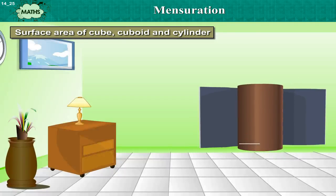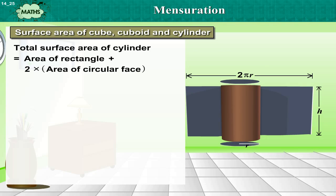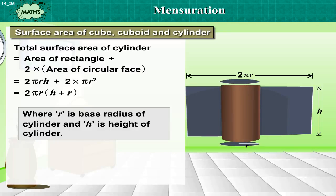Now, if we open a cylinder, then total surface area of cylinder is equal to area of rectangle plus 2 into area of circular face, which is equal to 2πRH + 2πR², which is equal to 2πR(H + R), where R is the base radius of the cylinder and H is the height of the cylinder.